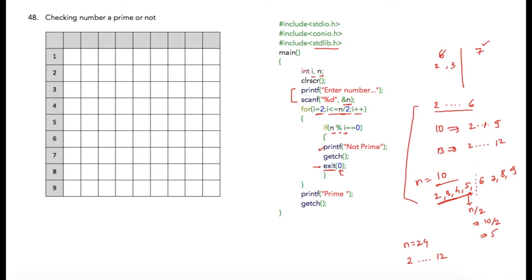If any number divides n, then there is no need of checking further, so we will simply terminate the program using exit function. Because if we assume number to be 6, then 6 is divisible by 2 and 3. But if 6 is divisible by 2 and of course 6 modulus 2 is equal to 0, so there is no need of checking 6 modulus 3 is equal to 0 or not.